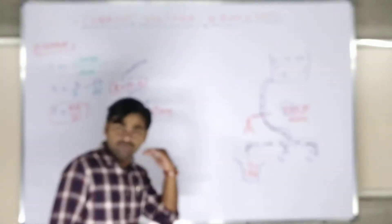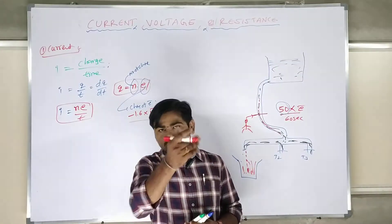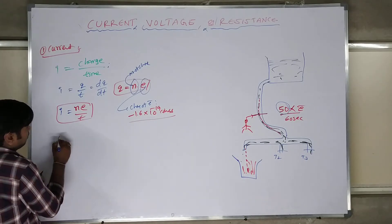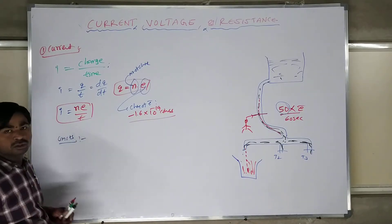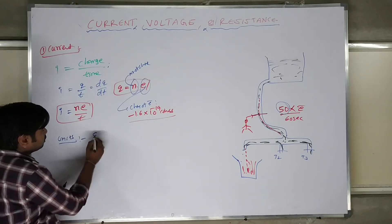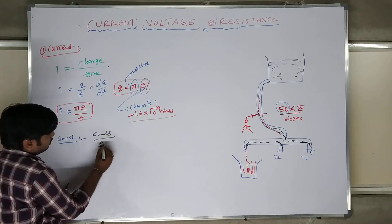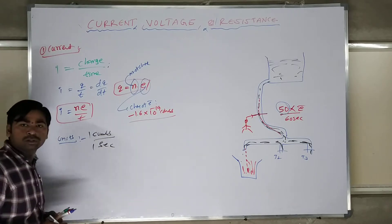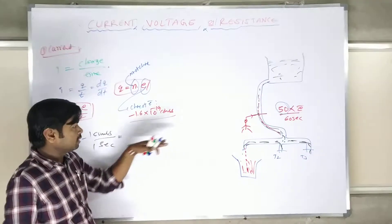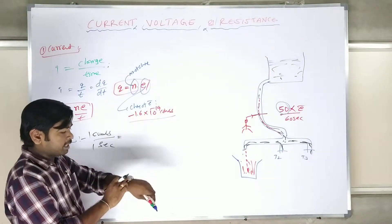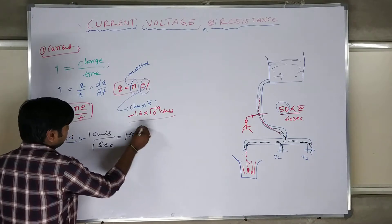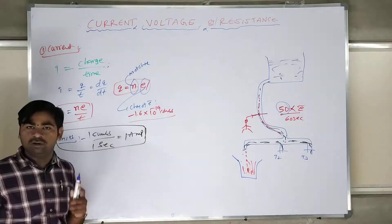The flow of electrons through an electrical conductor is nothing but current, given by Q/T. For units: I = Q/T means coulombs per second. One coulomb of charge passing in one second gives a current of 1 ampere. That is the unit of current — ampere.